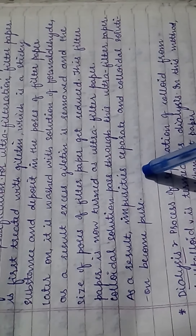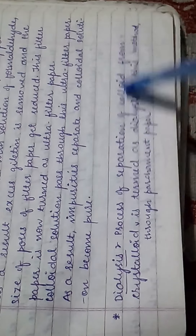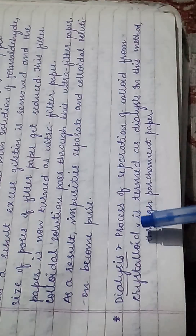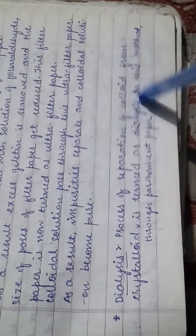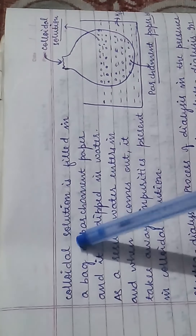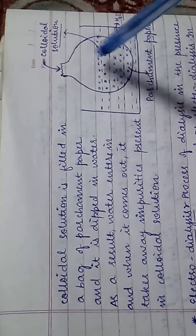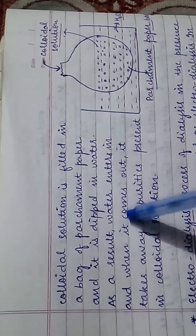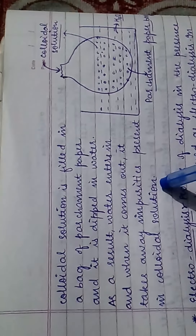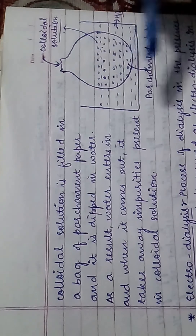When colloidal solution is passed through this ultrafilter, impurities separate out and the colloidal solution becomes pure. The second method is dialysis — the process of separation of colloidal solution from crystalloids through parchment paper. In this method, the colloidal solution is filled in a bag of parchment paper and dipped in water. Water enters, takes away the impurities, and purifies the colloidal solution.